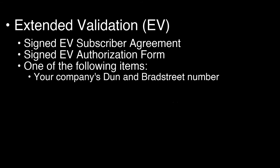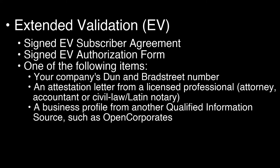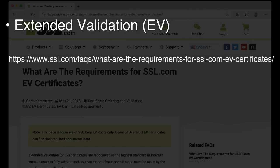Applicants must also submit one of the following items to verify that the business or organization is operational and that all individuals named in the subscriber agreement and request form are ranking members: your company's Dun & Bradstreet number, an attestation letter from a licensed professional such as an attorney, accountant, or civil law/Latin notary, or a business profile from another qualified information source such as Open Corporates. For links to the subscriber agreement, authorization form, and sample letters, as well as more information about the EV process, please visit this page on the SSL.com website.